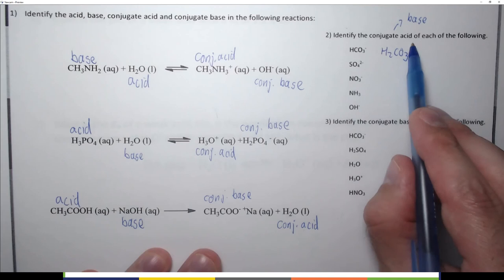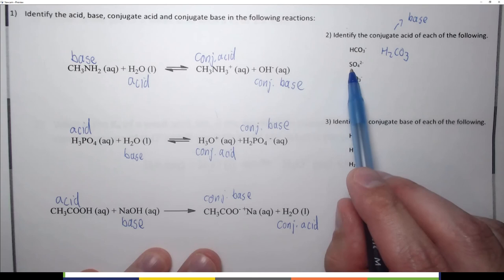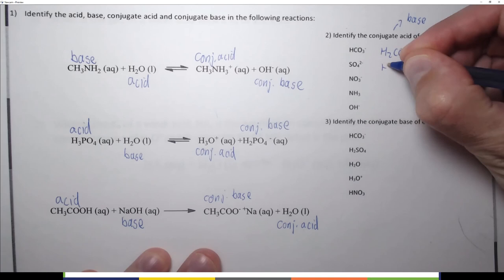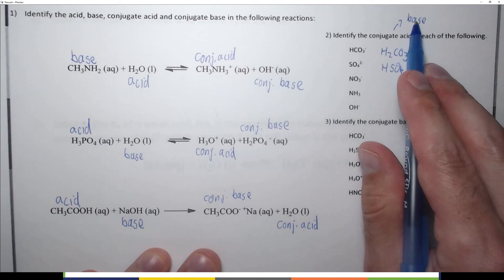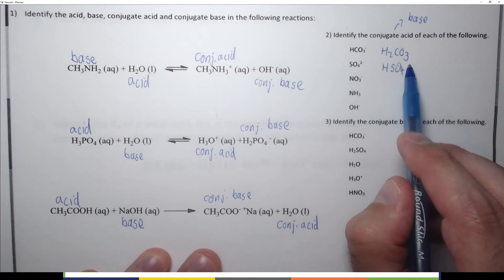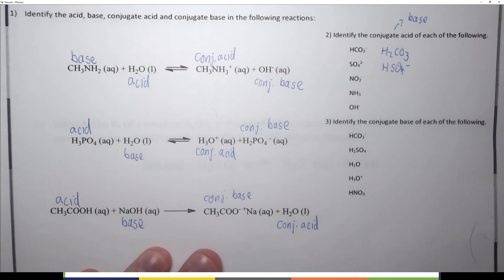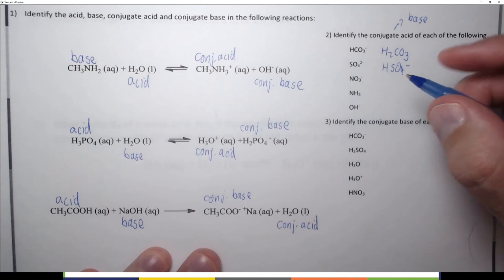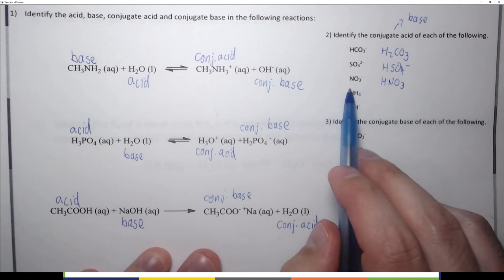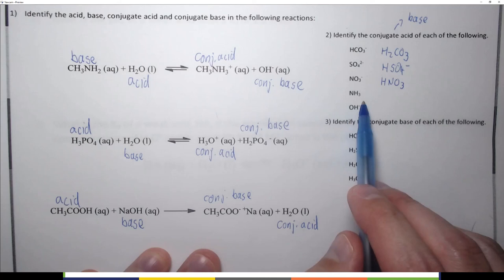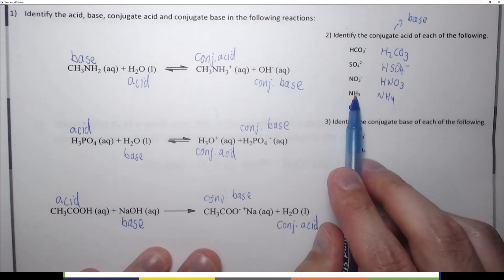For SO₄²⁻: add H⁺ to get HSO₄⁻. The charge is +1 + (−2) = −1, so HSO₄⁻. For NO₃⁻: add H⁺ to get HNO₃; plus + minus = neutral. For NH₃: add H⁺ to get NH₄⁺; it was neutral and gains a plus charge. For OH⁻: add H⁺ to get HOH, which is more commonly written as H₂O; minus + plus = neutral.